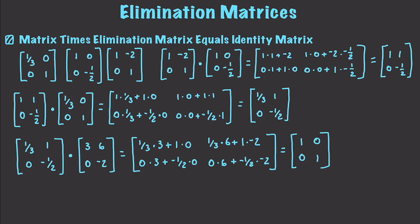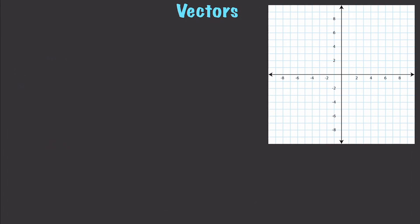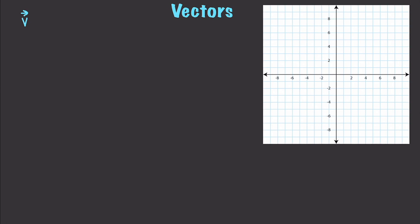Now I'm going to revisit vectors because we're going to be doing a lot more with them as this tutorial continues. Vectors can be thought of as a one-column or one-row matrix. You can write a vector in row form as we've seen before, or you can also write them as a column vector — for example with 4 and 6 inside.